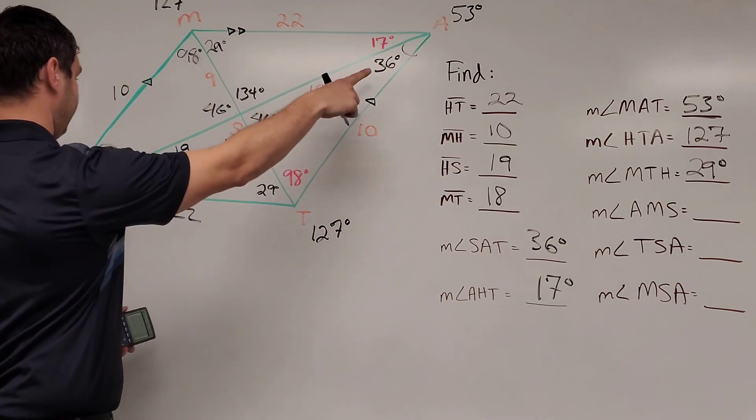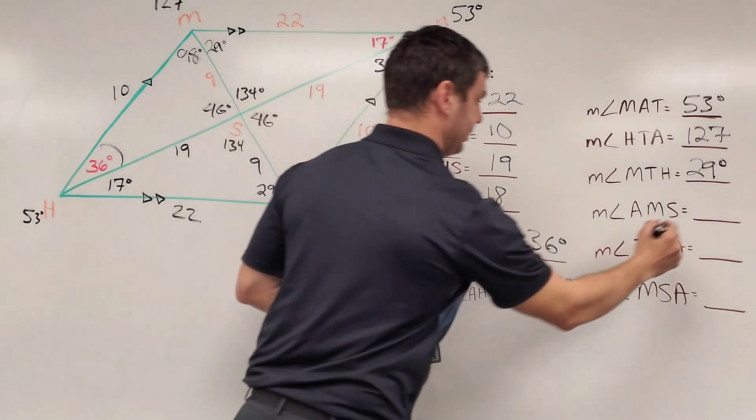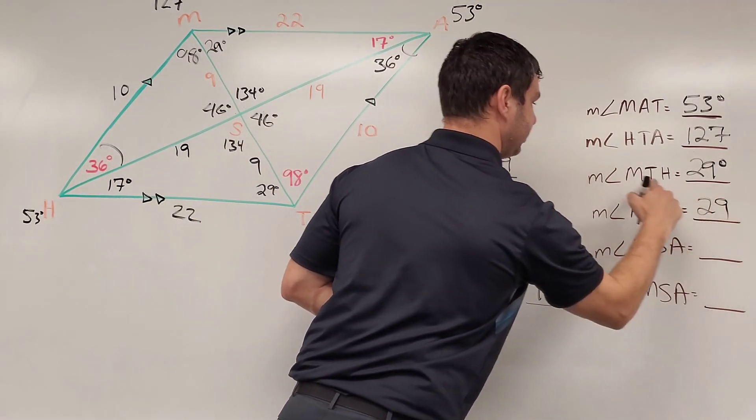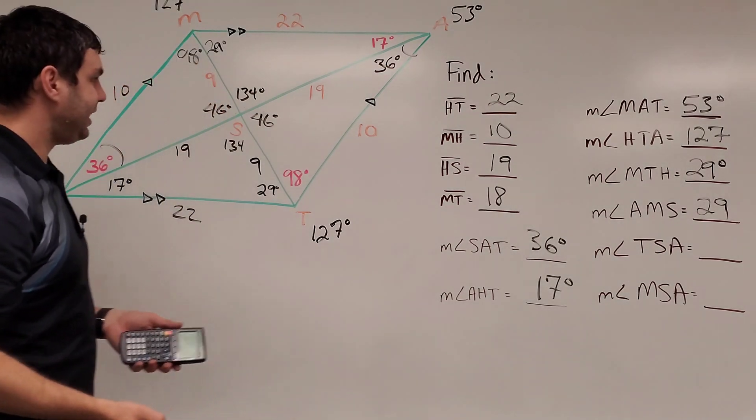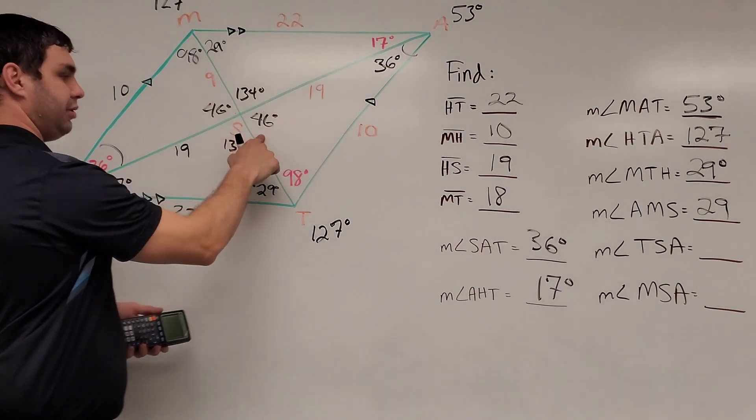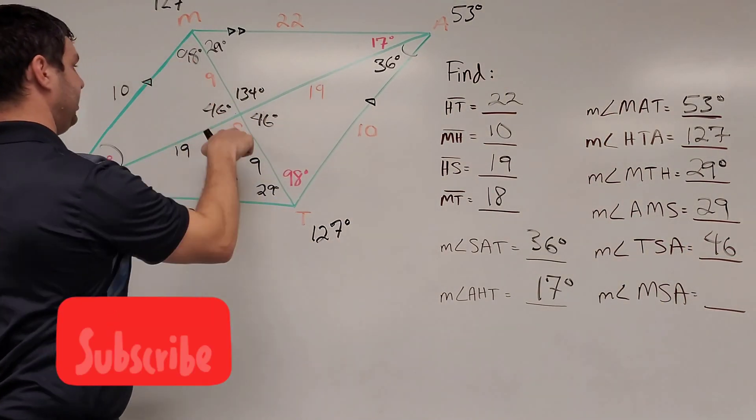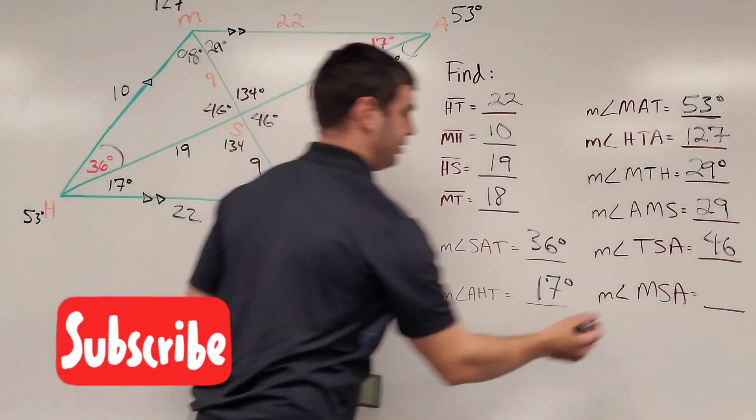AMS, A, where's the M, M and S, so 29 again, that's the alternate interior angle to that one right above it. TSA, TSA is 46. And the last one is M, S, A, M, S, A is 134.